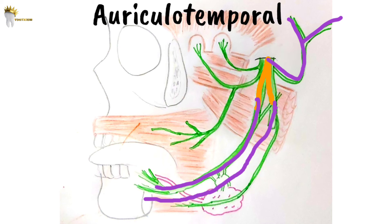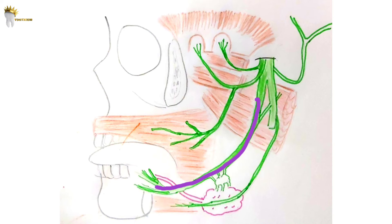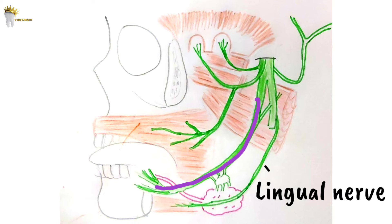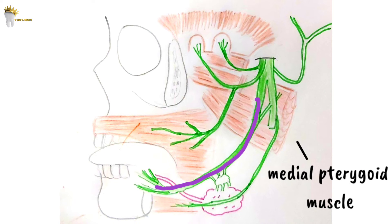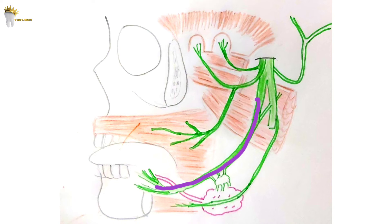The auriculotemporal nerve is not as significant in dentistry. The second branch is the lingual nerve, which also travels medial to the lateral pterygoid muscle. As it goes downwards in the pterygomandibular space, it lies between the ramus and the medial pterygoid muscle. From here, the lingual nerve reaches the side of the base of the tongue and lies just below the mucous membrane in the lateral lingual sulcus.